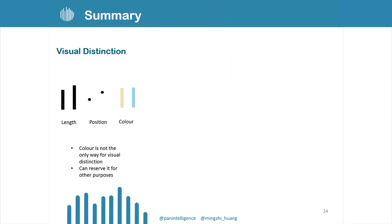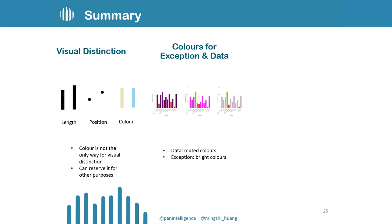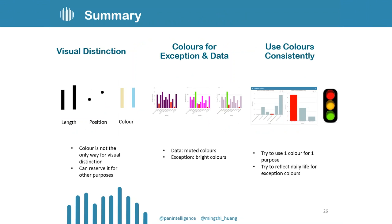In summary, color can be used for visual distinction, but there are many other options for visual distinction. Try to use something else for visual distinction and reserve colors for other purposes, like drawing people's attention. We can use muted colors to represent the data, while using bright colors to represent the exceptions, then the exceptions will stand out easily. We want to use colors consistently, and use one color for one purpose rather than multiple purposes. We also want to try to reflect daily life for our exception colors.